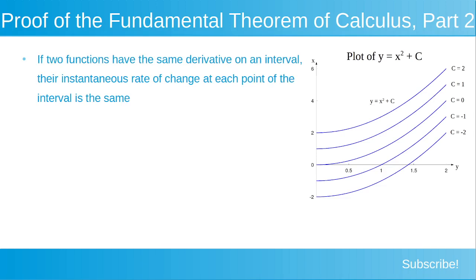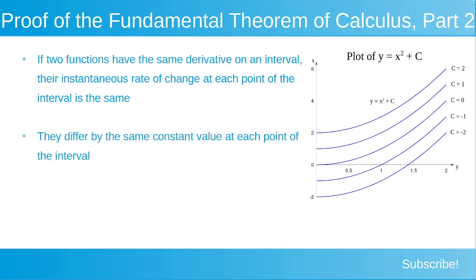If two functions have the same derivative on an interval, their instantaneous rate of change at each point of the interval is the same. If two functions are changing by exactly the same amount at each point on an interval, then they're going to differ by the same constant value at each point of the interval. This is what we use to express F as being equal to G plus c, because F and G are both antiderivatives of f and therefore have the same derivative and differ by a constant.